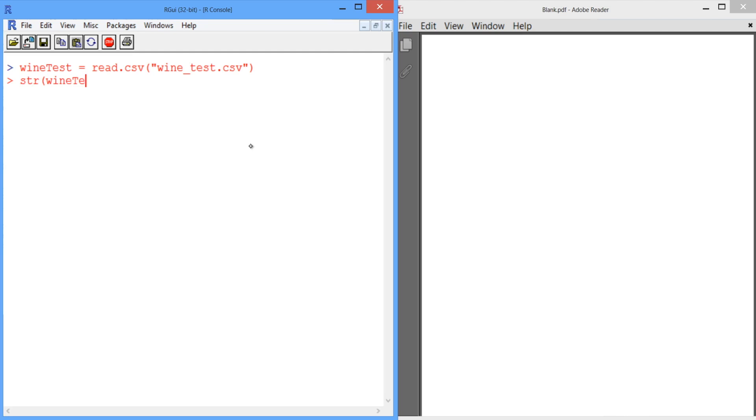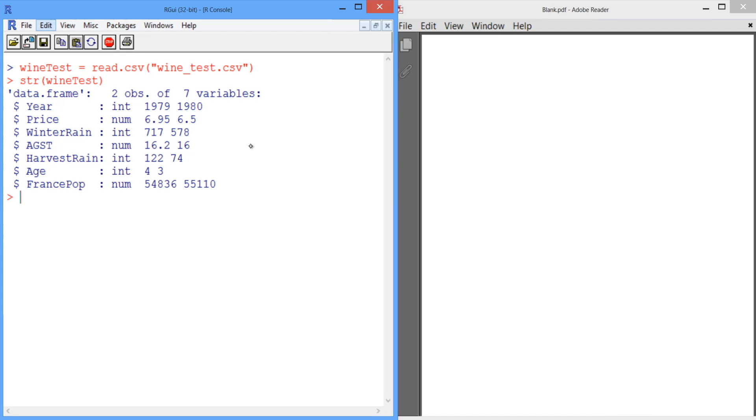If we look at the structure of wineTest, we can see that we have two observations of the same variables we had before. These data points are for the years 1979 and 1980.